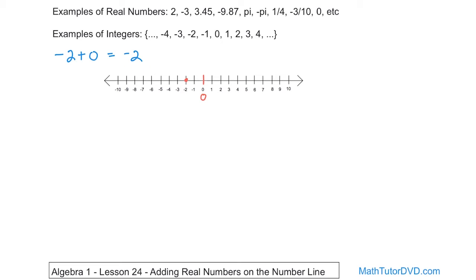These numbers going left are lower and lower — more and more down into the hole, below sea level, so to speak. Anything going right is increasing. So when you add positive numbers, you go right, and when you add negative numbers, you go left. In this case, we're adding zero, so we don't go either way — we just stay in one spot. So the answer is negative 2 because we didn't move.